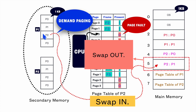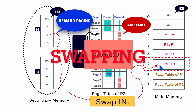So that space will be swapped out from the frame in main memory, and the portion of the program in page 2 of process 1 will be loaded into that freed-up space — swapped in. This process is called swapping.